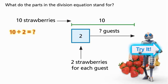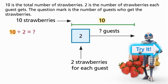What do the parts in the division equation stand for? Ten is the total number of strawberries. Two is the number of strawberries each guest gets. The question mark is the number of guests who get the strawberries.